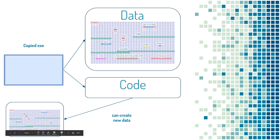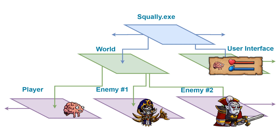Here we have another chunk of data created outside of the copied EXE. Here we have our blue section up top with the copied EXE file. Once the EXE gets loaded into virtual memory and its code starts running, it might load up the user interface, then it might load up the world, and the world in turn will load up the player and enemies and all sorts of objects. You can think of this tree as being much larger — the arrow shooting off here might be the sound system, the player might have an inventory, the inventory might have items, and there might be a tile map in the world. In a real game, this tree would be quite massive.